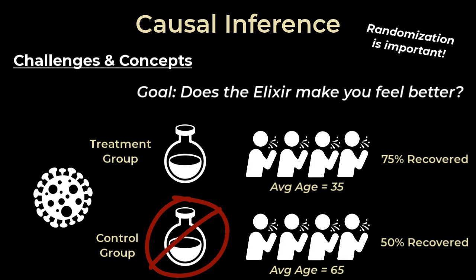The second topic is selection bias, and confounders actually segue very well into this. Selection bias occurs when the group of users chosen for the treatment group isn't a good representation of all users in the population. This is exactly the case where the treatment only represents young people and is not really representative of the population. So there is a selection bias here, and we need to account for this when looking at prior data.